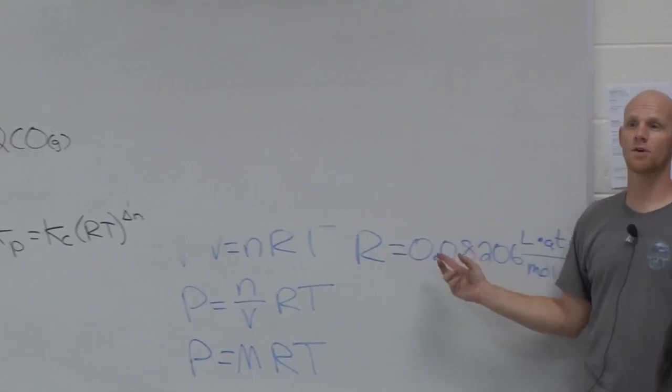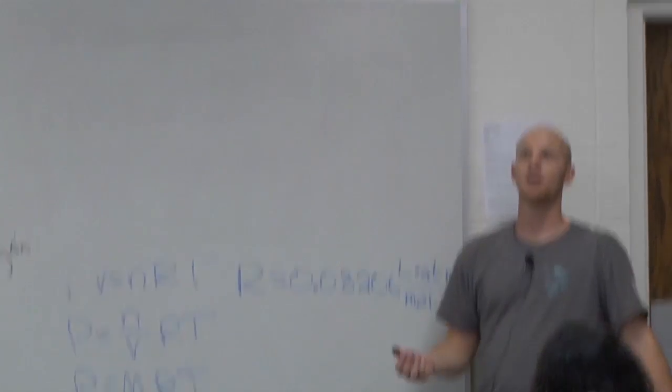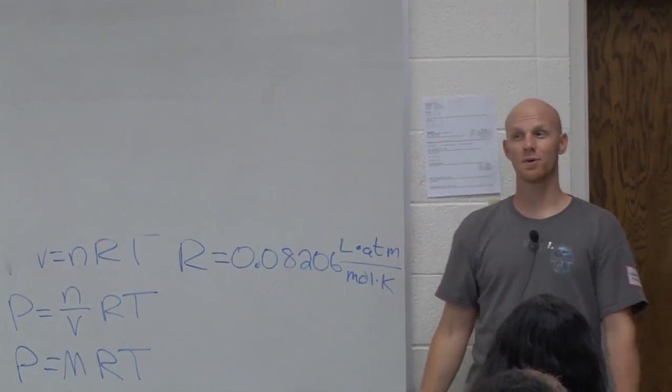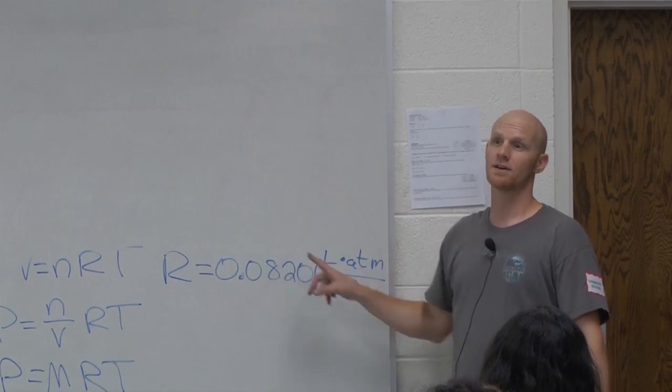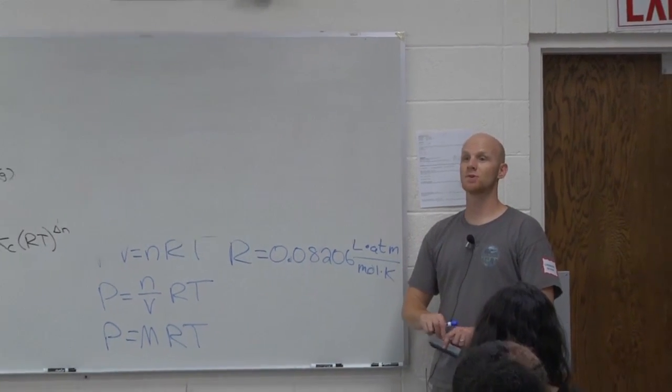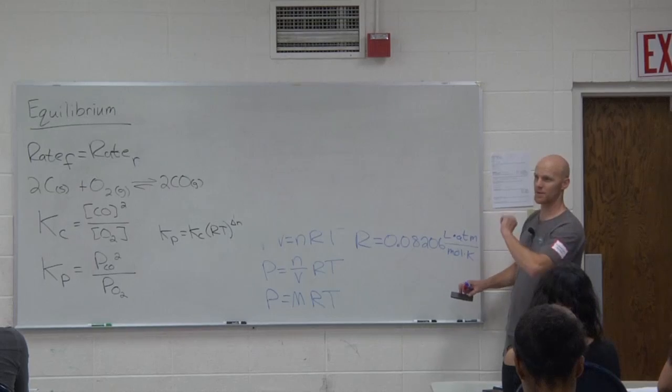But every other time this semester, when R comes into context, it's going to be talking about an equation involving energy, and you're going to use that other R value, 8.314 instead, joules per mole Kelvin. But this one place this semester, we use this value of R. Again, both values are going to be on the front of your exam. You need to know which one to use and when. Thanks for bringing that up, by the way.